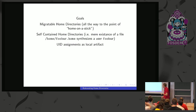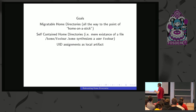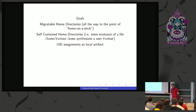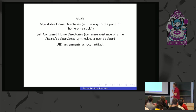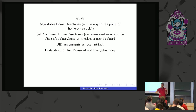I want UID assignments to become a local artifact. At the moment you log in, the UID gets assigned and it's valid for this local system. When you move the home directory to another system, ideally you get the same UID, but if it's already taken, you get a different one and we deal with this nicely. UIDs become local artifacts. If you actually want a fixed one, that's supported too. But the default should be that people don't have to think about synchronizing UIDs across the entire organization.